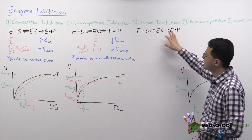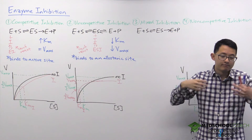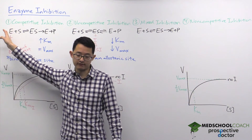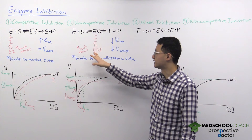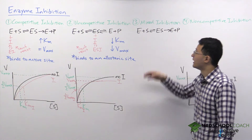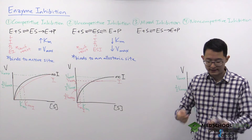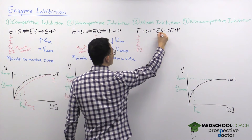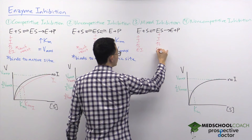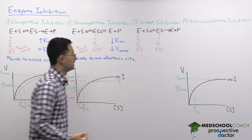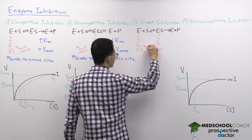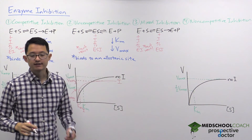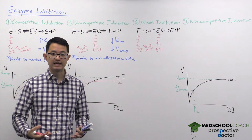The third type of inhibition is mixed inhibition. The competitive inhibitor can only bind to the free enzyme; the uncompetitive inhibitor can only bind to the enzyme-substrate complex. A mixed inhibitor can do both — it can bind to the free enzyme and also to the enzyme-substrate complex. In both cases, once the inhibitor is bound, the complex cannot react, so products cannot form and the reaction is inhibited.